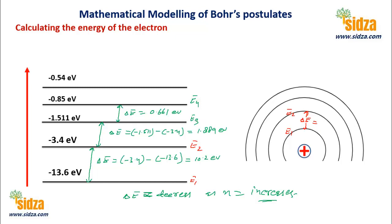If you want to find the energy difference between the first shell and infinite position: energy at infinity minus E1 = 0 minus negative 13.6 = plus 13.6 electron volts. That is the energy gap between the first shell and infinite position.